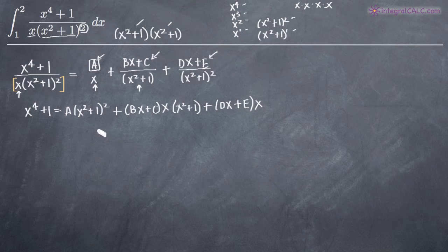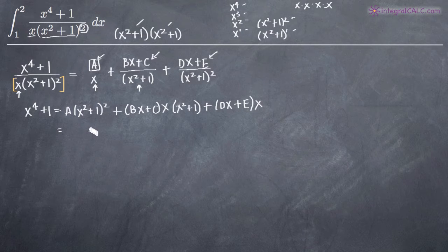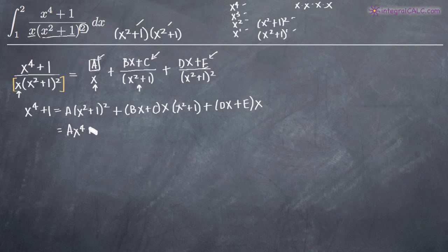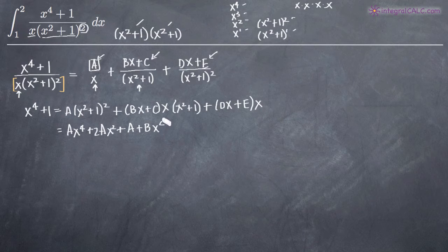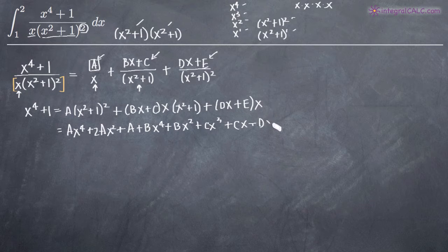Now the denominators on both sides have completely disappeared. We use algebra to multiply everything out — skipping the tedious steps — and what we get is: a times x to the fourth plus 2ax squared plus a, plus bx to the fourth plus bx squared plus cx cubed plus cx, plus dx squared plus ex.